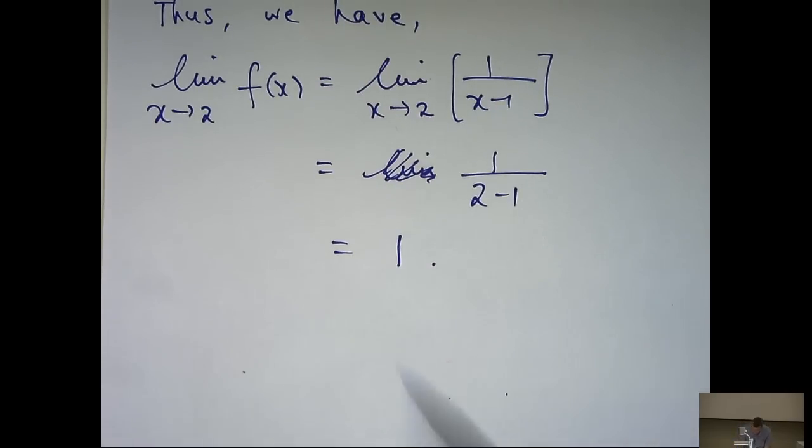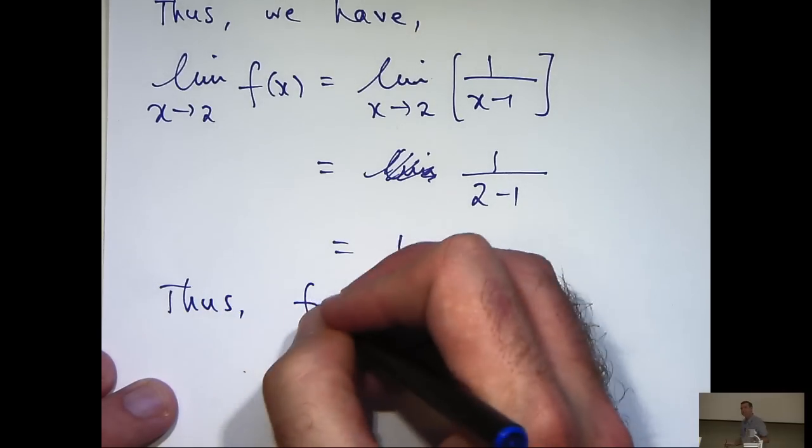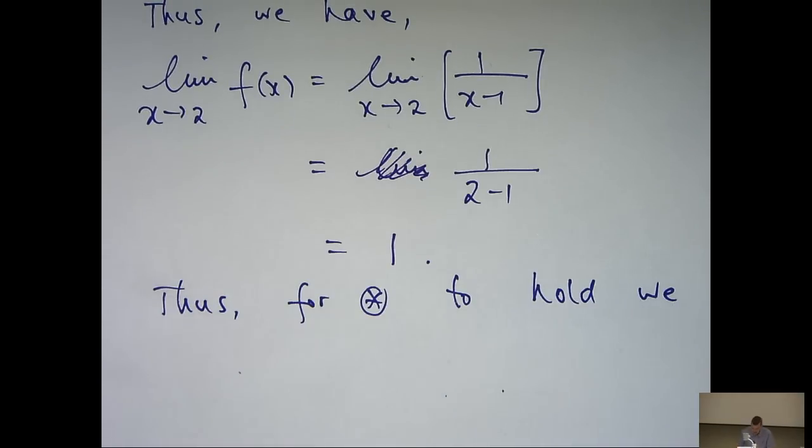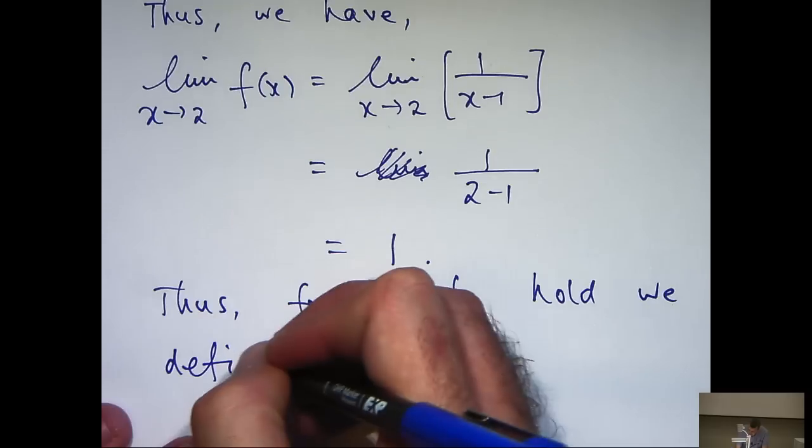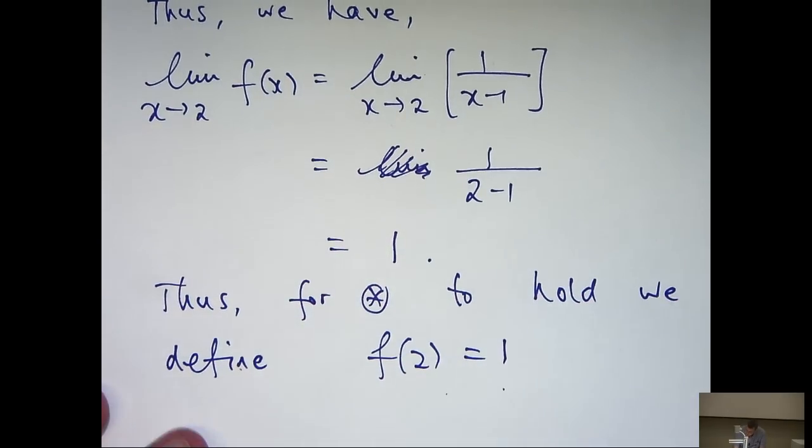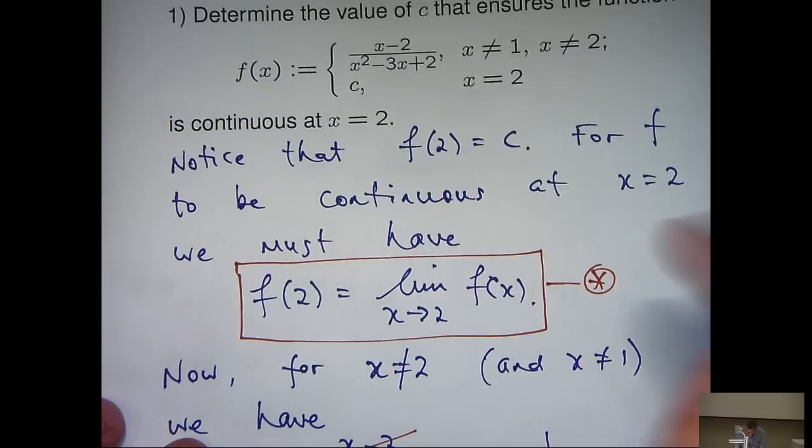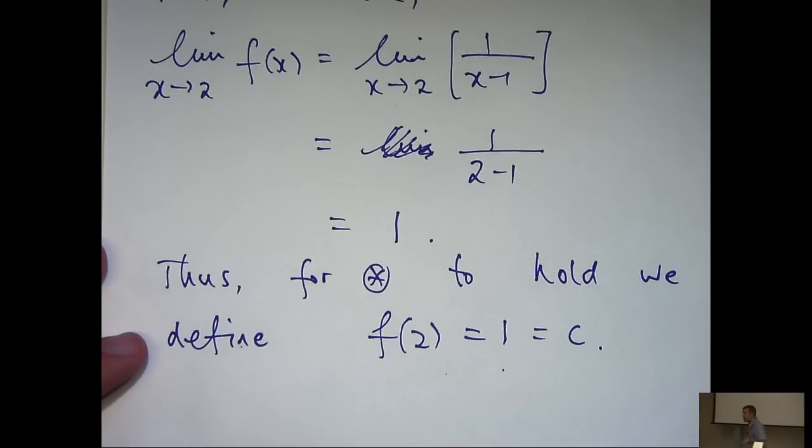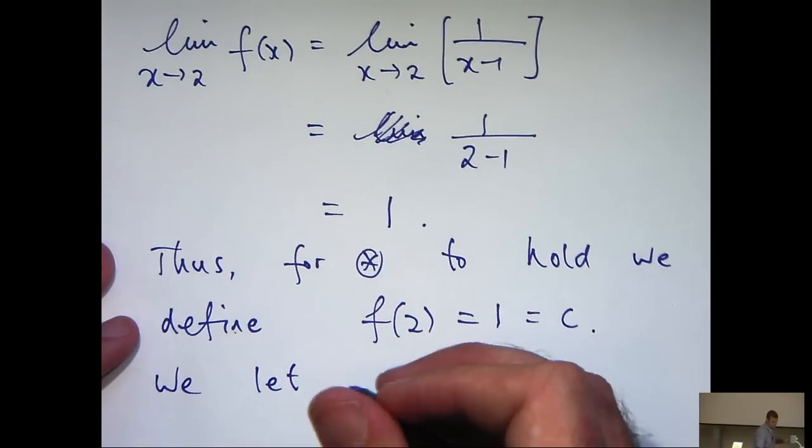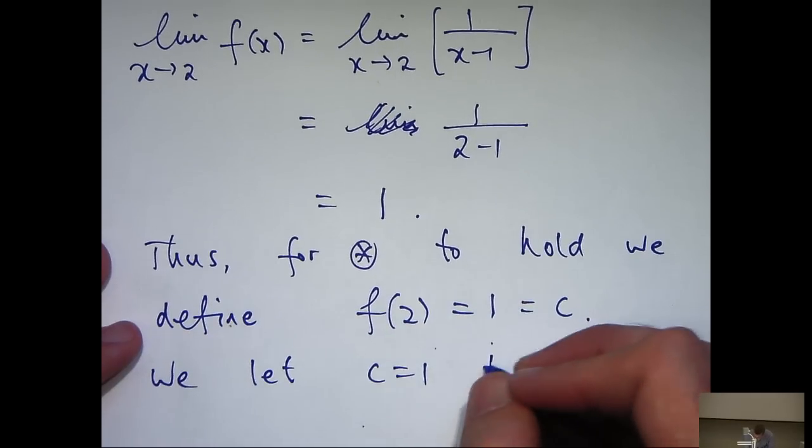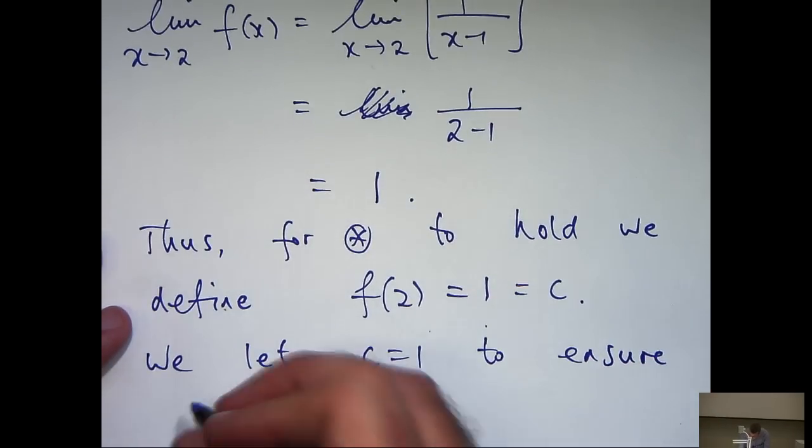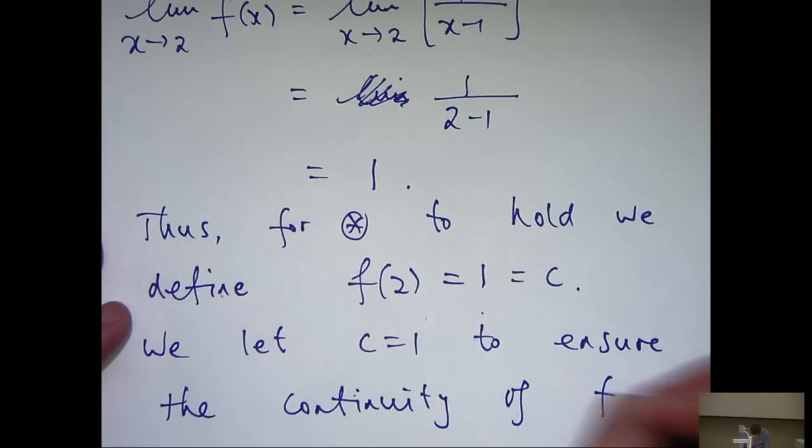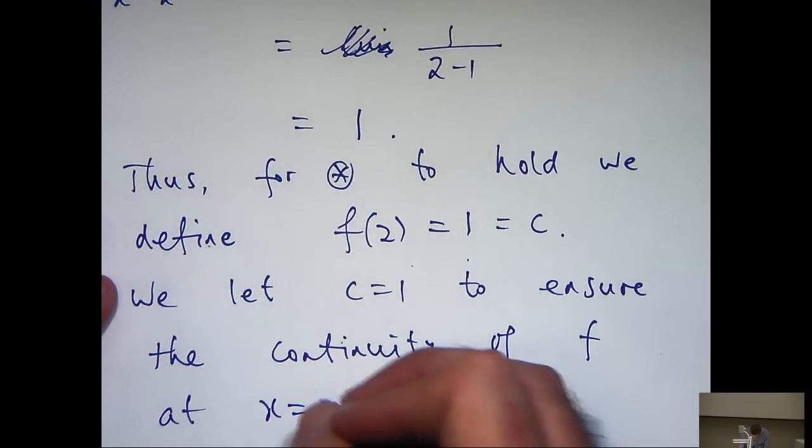So let's write that down. So we're going to define f of 2 to be 1. And we know that, well, f of 2 is just c, so c will equal 1. So finally, let's make a conclusion. We let c to be 1 to ensure the continuity of f at the point x equals 2.